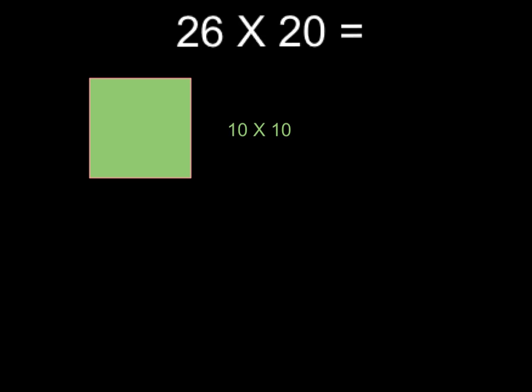For this first of the two methods, you can use base 10 blocks, or you can use grid paper to draw some precise models, or you can just use any paper and do the best you can to draw a decent enough model so that you can see what's happening. Since we could pretend that we're using base 10 blocks, we could draw a 10 by 10 square to get things started.